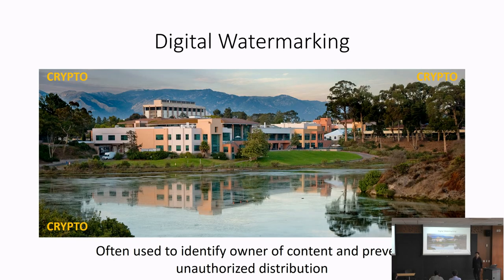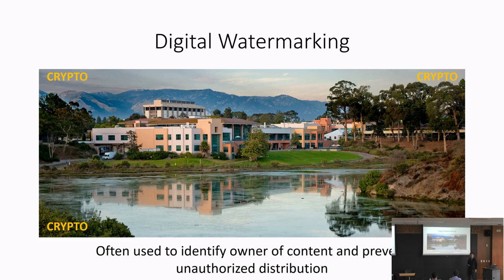When we think about digital watermarking, the first example that usually comes to mind is watermarking for images, where a photographer or content creator would take a picture and embed their name or their organization's name within the image to both identify the owner of the content, as well as prevent unauthorized redistribution.